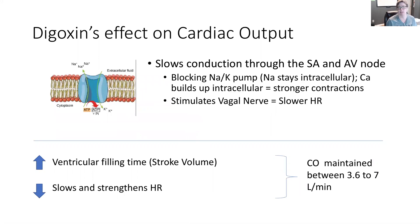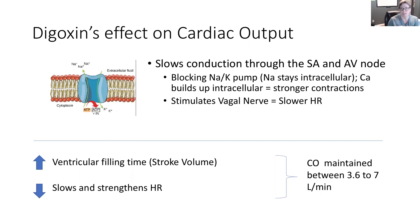Digoxin has a different effect. It slows conduction between the SA node down through the AV node — it takes a little longer for the impulse to travel — because it's blocking the sodium-potassium pump. Calcium will stay inside the intracellular section, building up and causing a stronger contraction. Digoxin can also stimulate the vagus nerve, which will lower the heart rate.